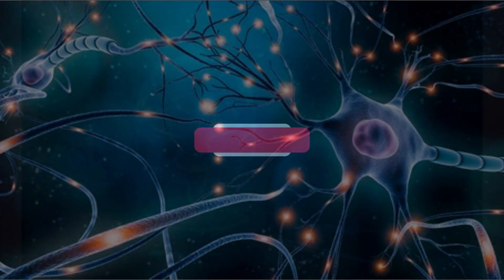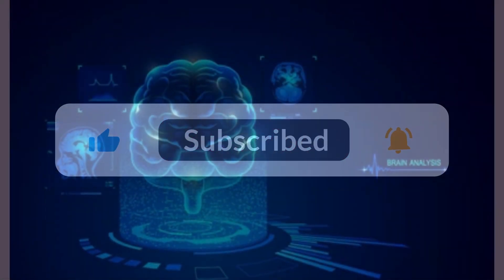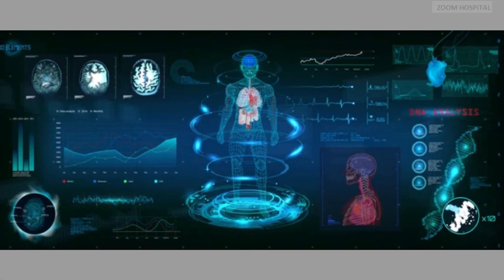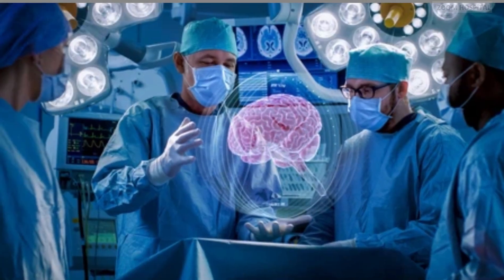Elon Musk disclosed that Neuralink's initial product will be named Telepathy. This first trial focuses on evaluating the safety of the implant and the surgical robot used in the wireless brain-computer interface.